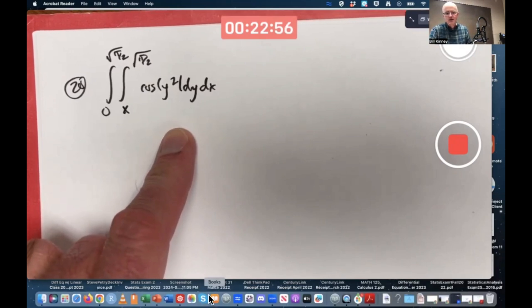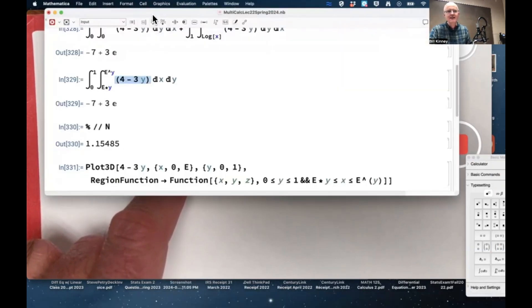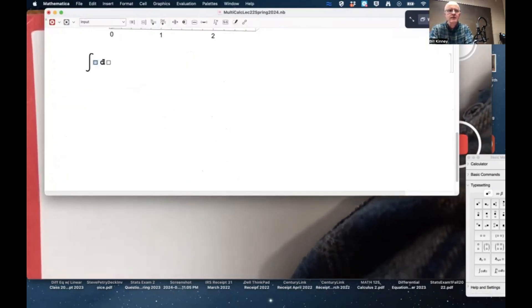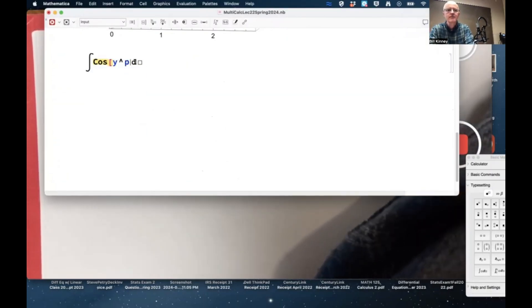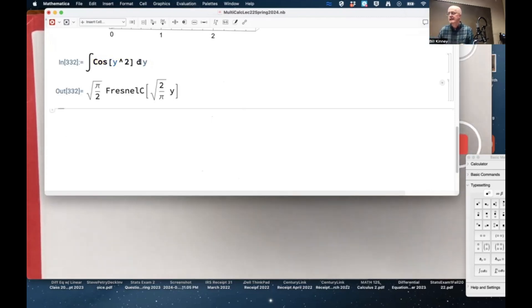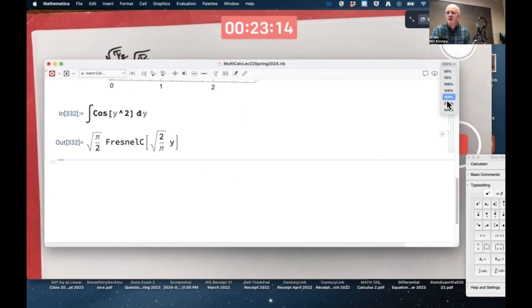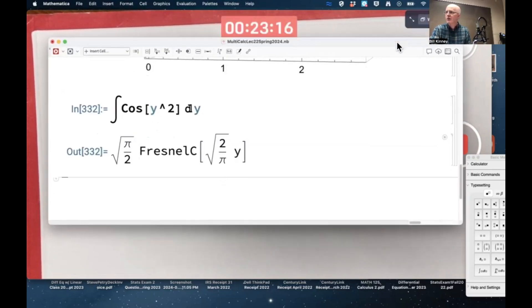If you wanted to give a little bit more detail, you could use Mathematica and say, hey Mathematica, what's the antiderivative of cosine of y squared with respect to y? Fresnel C. Is that Mathematica not knowing what to do? No, Mathematica does know what to do. Call Fresnel.